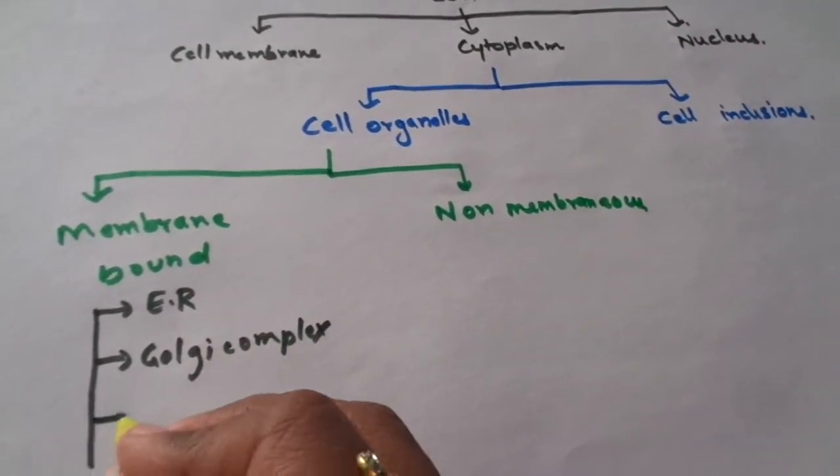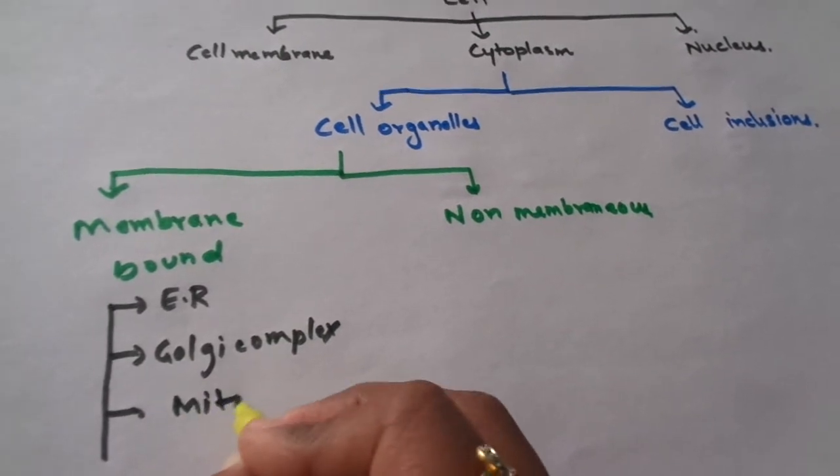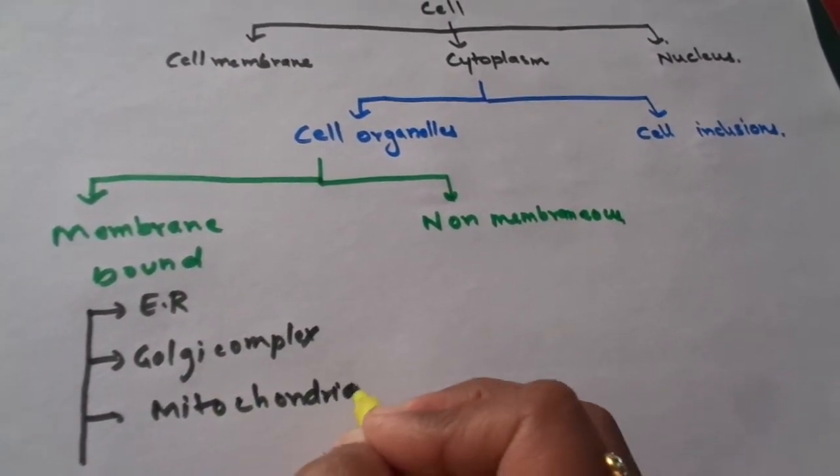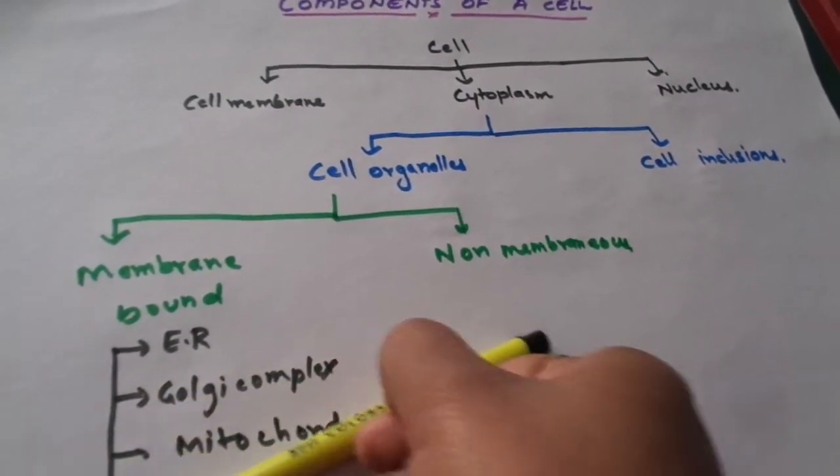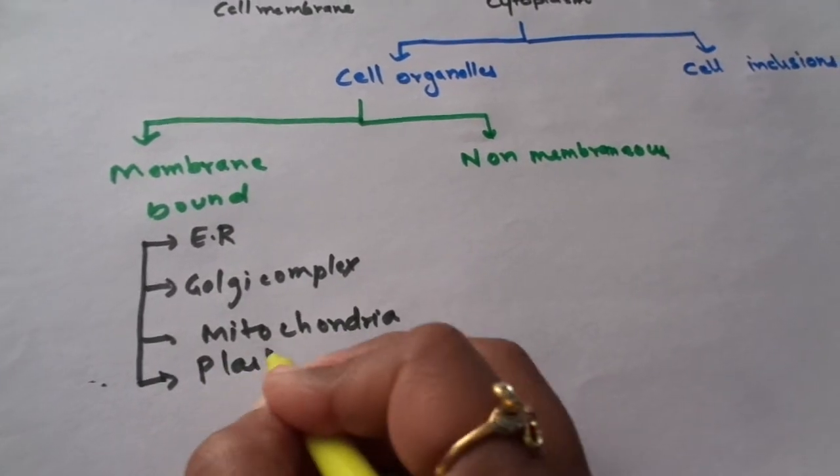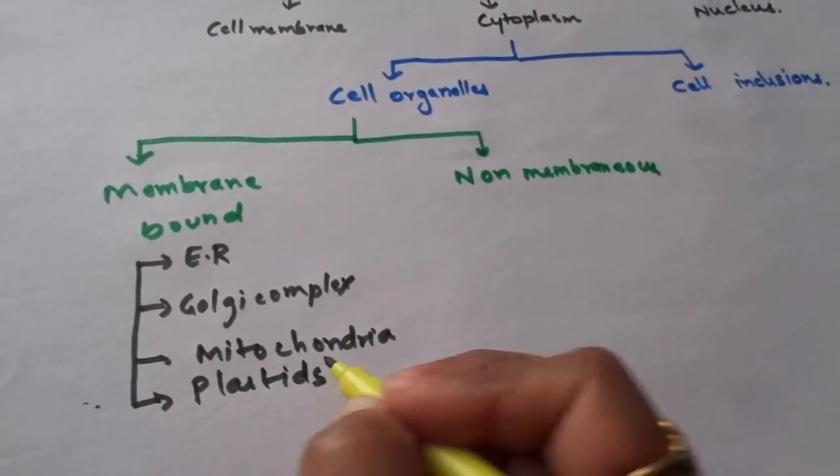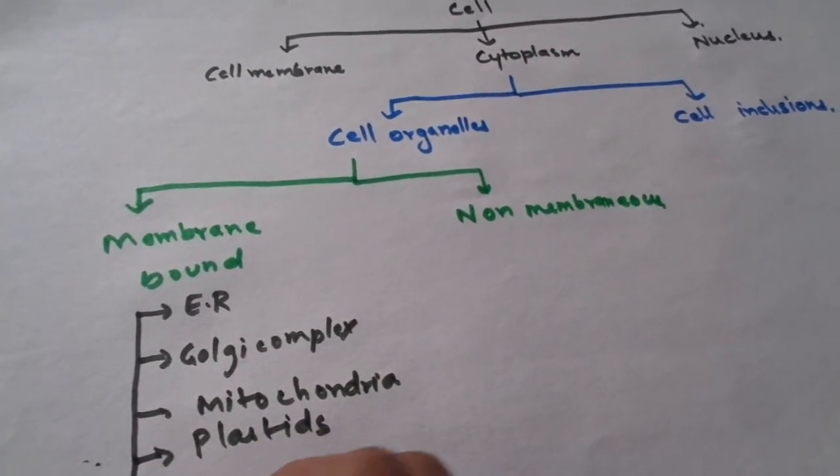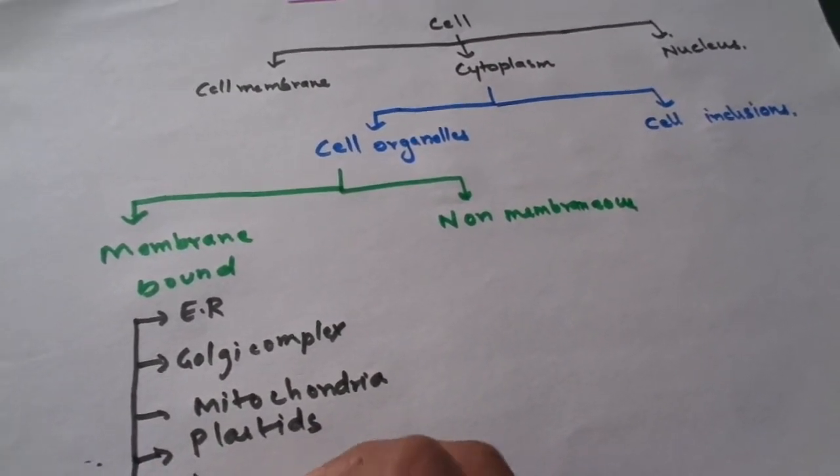Then comes mitochondria, then plastids. Plastids are present only in case of plant cells, and lysosomes.